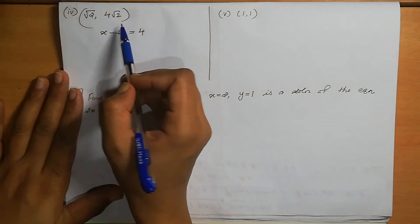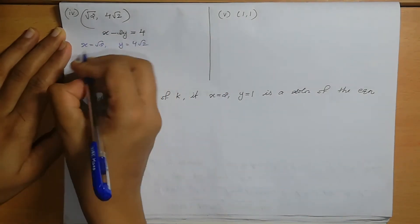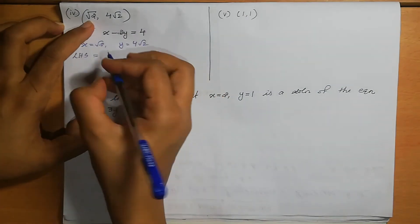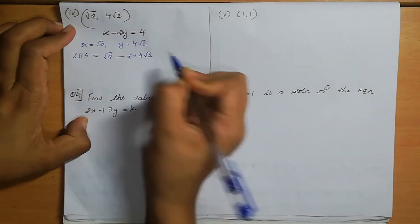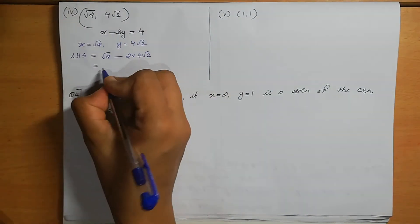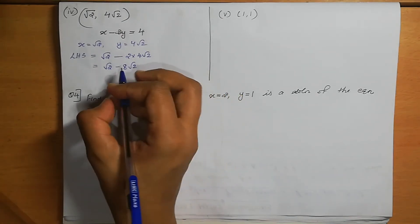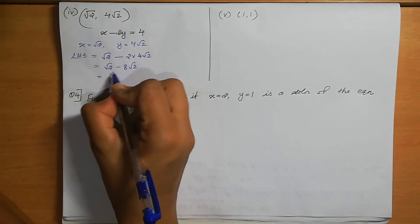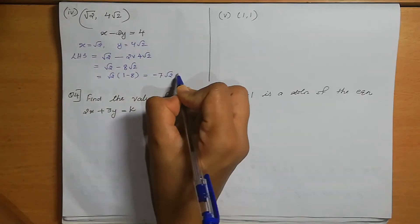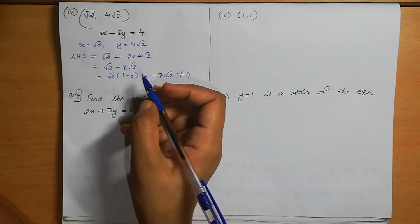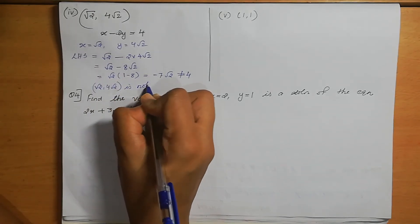Fourth, check (√2, 4√2): x=√2, y=4√2. LHS = √2 − 2×4√2 = √2 − 8√2. Taking √2 as common: √2(1 − 8) = −7√2, which is not equal to 4. Therefore, (√2, 4√2) is not a solution of this equation.